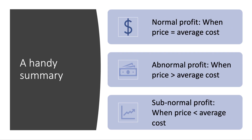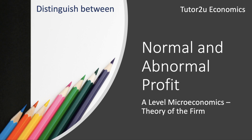Here's a handy summary. You make a normal profit when price equals average cost. You make abnormal profit when price is greater than average cost. Some firms make losses, of course — we call that sub-normal profit or economic loss, where the price they're charging is less than the average cost.